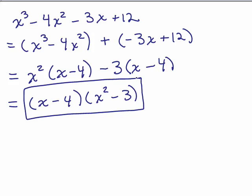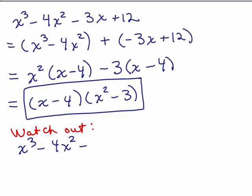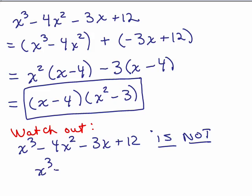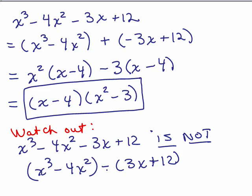Check by multiplying it back out to verify you get x³ - 4x² - 3x + 12. Be careful: x³ - 4x² - (3x - 12) is not the same as x³ - 4x² - 3x + 12. You cannot just put the minus sign in front of the parentheses — that gives a negative 12, but it was supposed to be positive 12. If you want to put a minus sign out in front of the parentheses, you are going to have to change the sign inside to a minus sign as well.